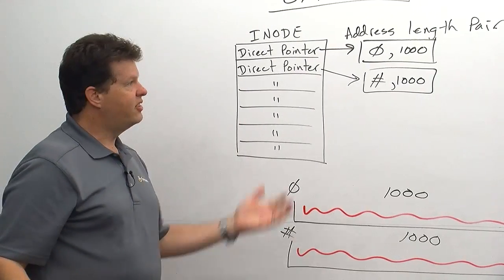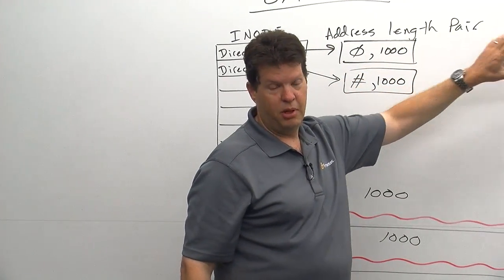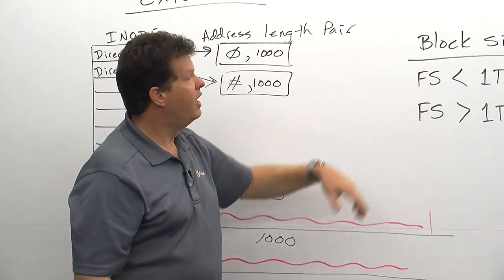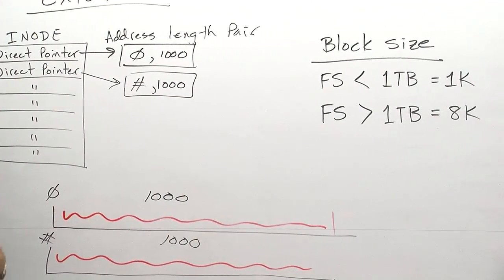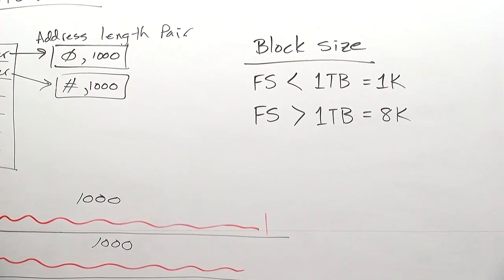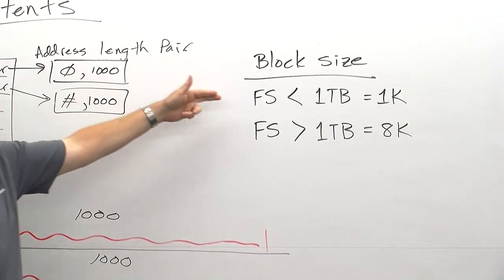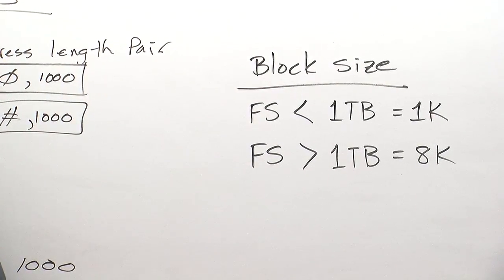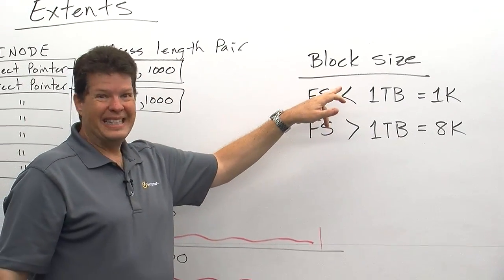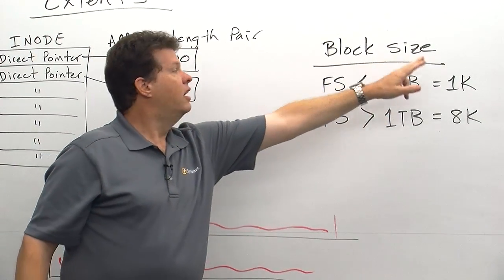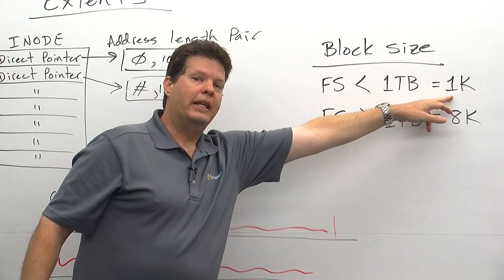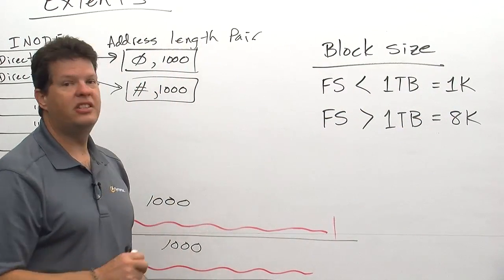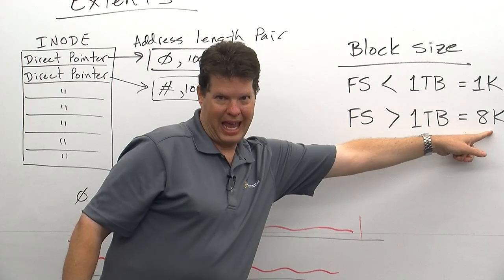Now, another part of extents is understanding block size. Block size is an important piece of this puzzle. Block size defines the minimum size an extent can be. So the block size is established when the file system is created. Now, the default values are, if your file system is less than one terabyte, the default block size will be 1k. If the file system is greater than one terabyte, it'll be 8k.